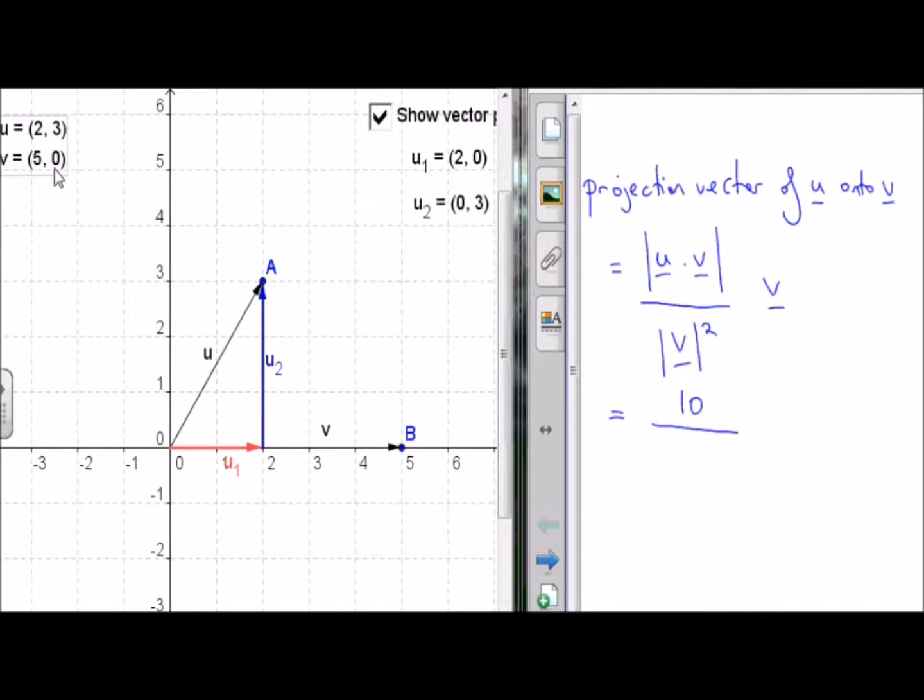Take the square root of that, we end up with 5. Then we square that, we end back with 25. And then multiply that by vector v, which is the vector (5,0).